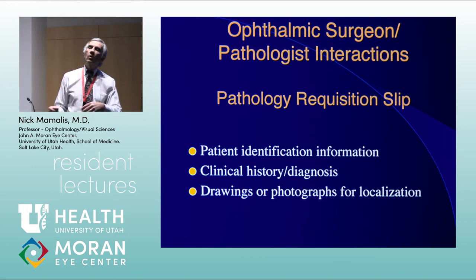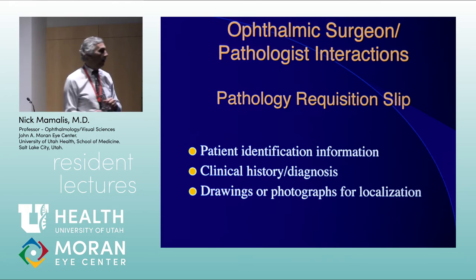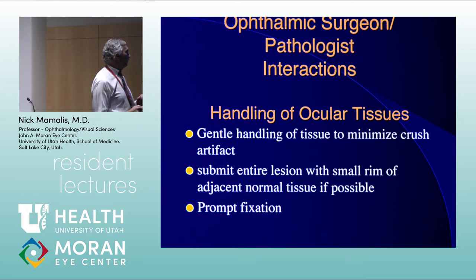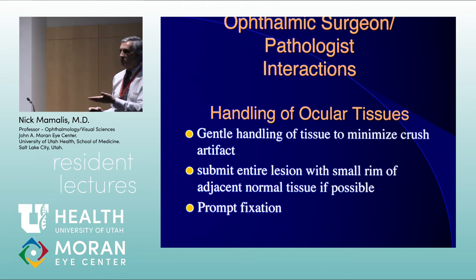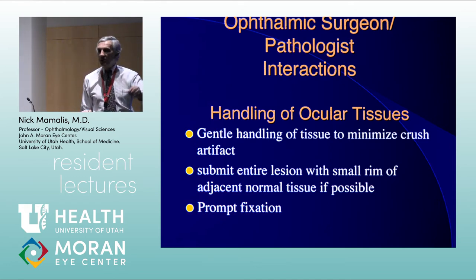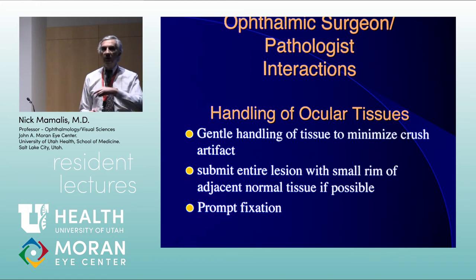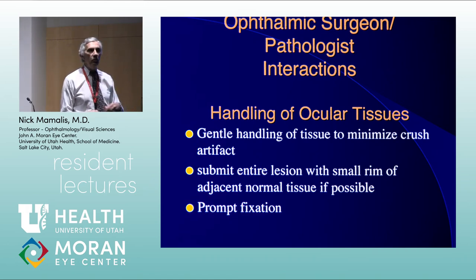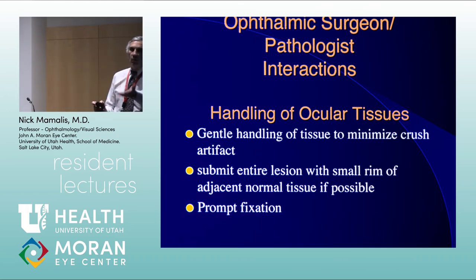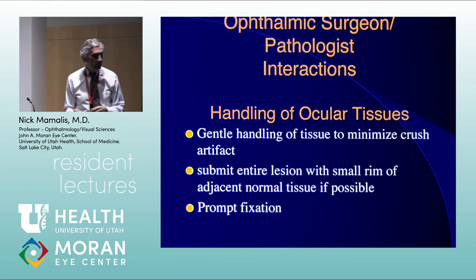When handling ocular tissue, be delicate. If you grab it too tight with a forcep and crush it, we can't tell what that tissue is — that's crush artifact. If you're looking at something abnormal, get a rim of normal tissue around it if you can. Make sure the specimen gets fixed promptly — don't let it sit out over the weekend before it goes into fixative. The most common fixative we use is 10% neutral buffered formalin for the vast majority of specimens.